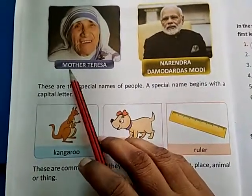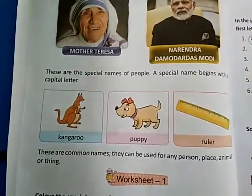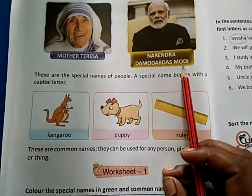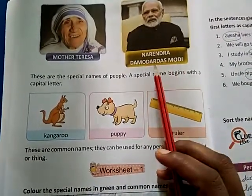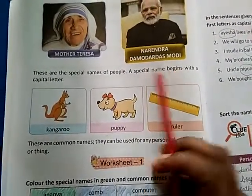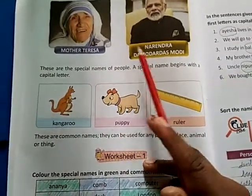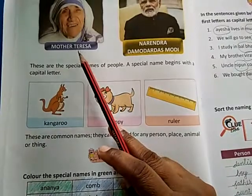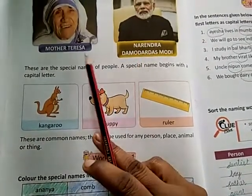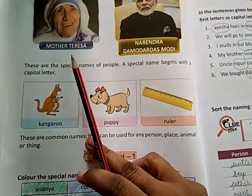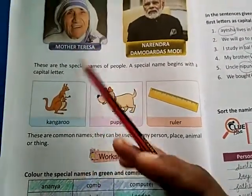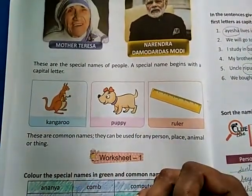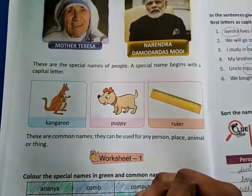Some more names are given to you. Mother Teresa — and next, Narendra Damodar Das Modi. It is also a special name. These are the special names of people — yeh people ke special name hain, jaise ki aapka khud ka name hai, Anket, Tina — yeh jo name hain, sab ke apne apne name hote hain, wo kya hote hain? Special name hote hain.